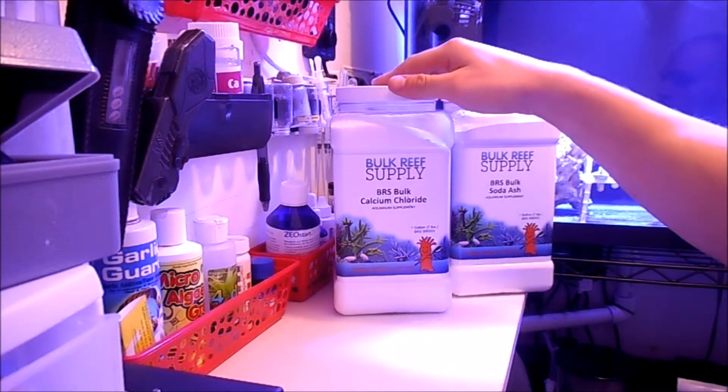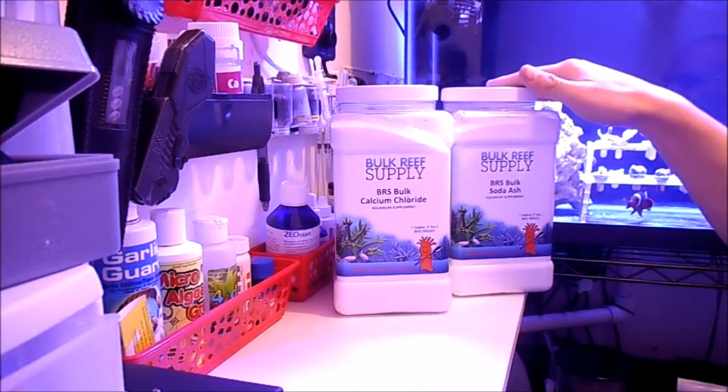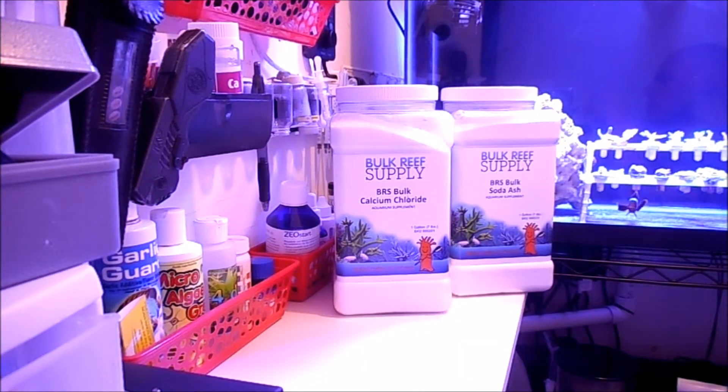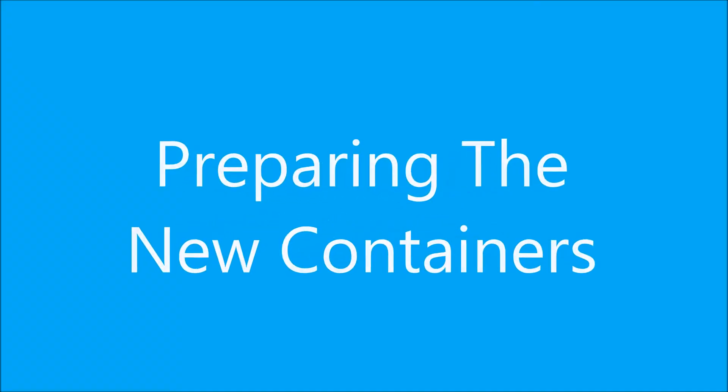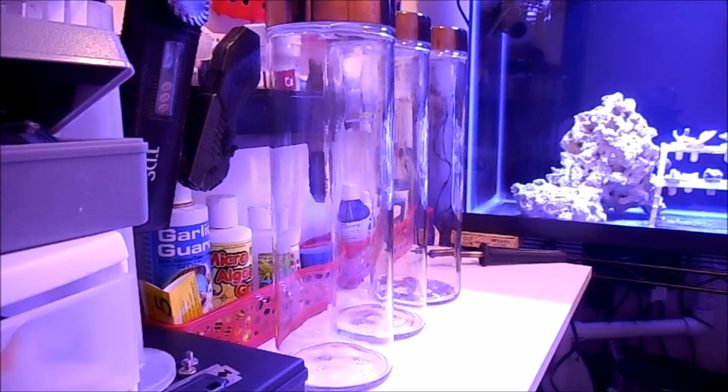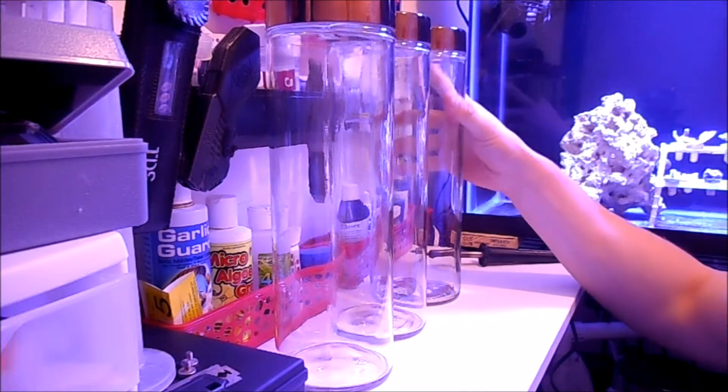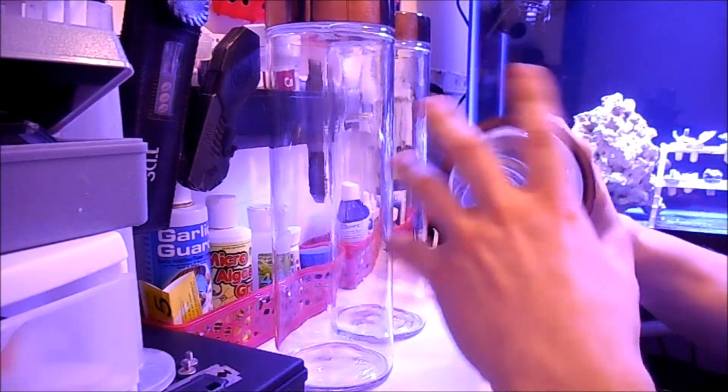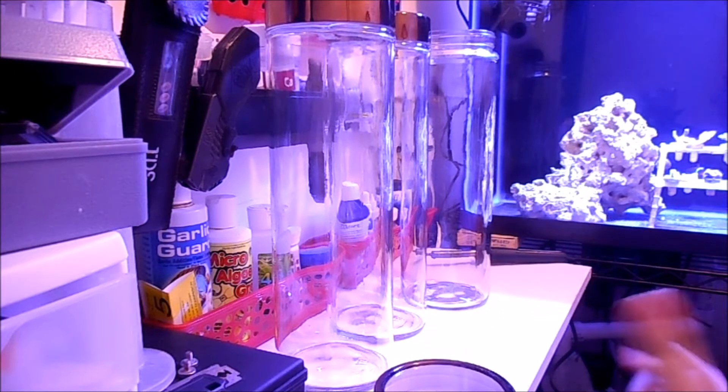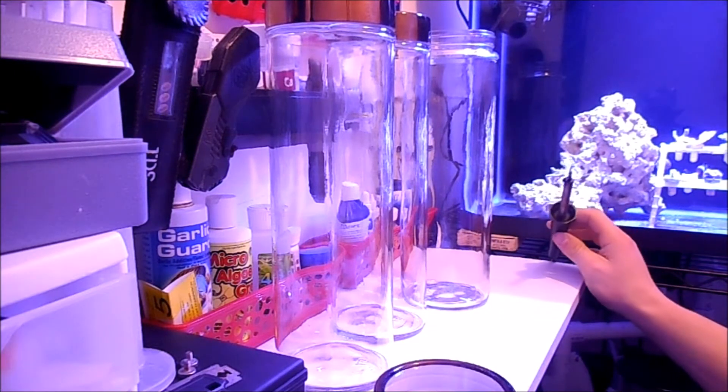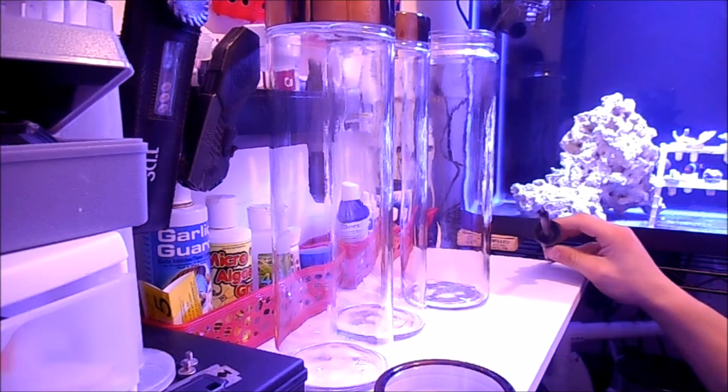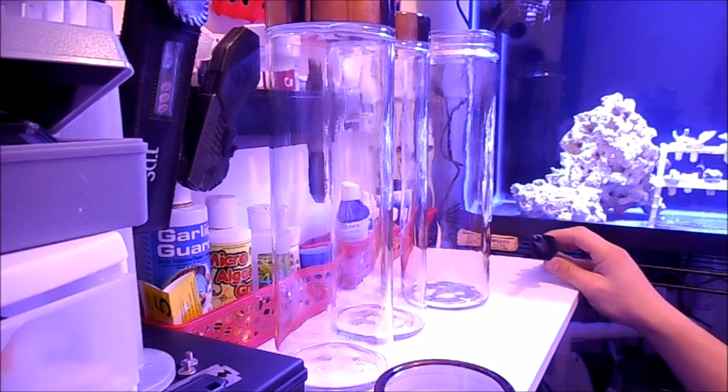And then we're going to go ahead and mix up a new batch with bulk calcium chloride and bulk soda ash. All right, stay tuned. All right, well let's get started. We have our three cylinders here. I'm just going to take the cover off. All right, now I have a soldering iron gun here.